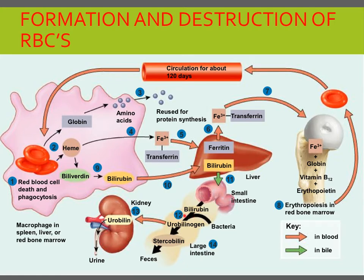Within the liver, bilirubin is released into bile, which passes into the small intestine and then into the large intestine. In the large intestine, bacteria convert bilirubin into urobilinogen. Some urobilinogen is absorbed back into the blood and converted to a yellow pigment called urobilin and excreted in urine. Most urobilinogen is eliminated in feces as stercobilin, a brown pigment that gives feces its characteristic color. In summary, the amino acids from globin and the iron are reused to make red blood cells, while the heme portion is converted into pigments and excreted.